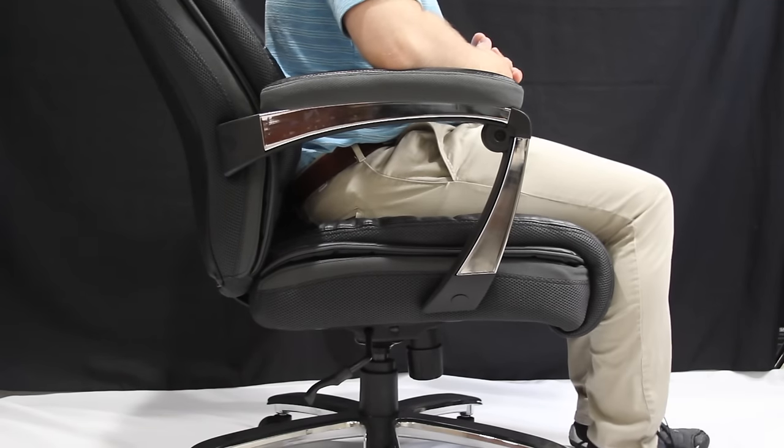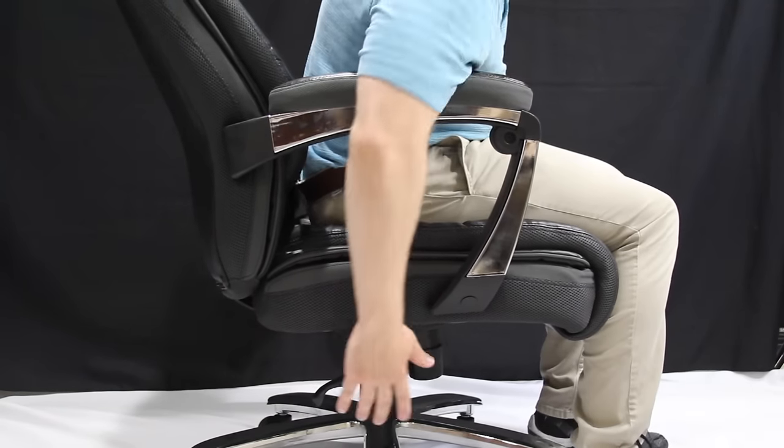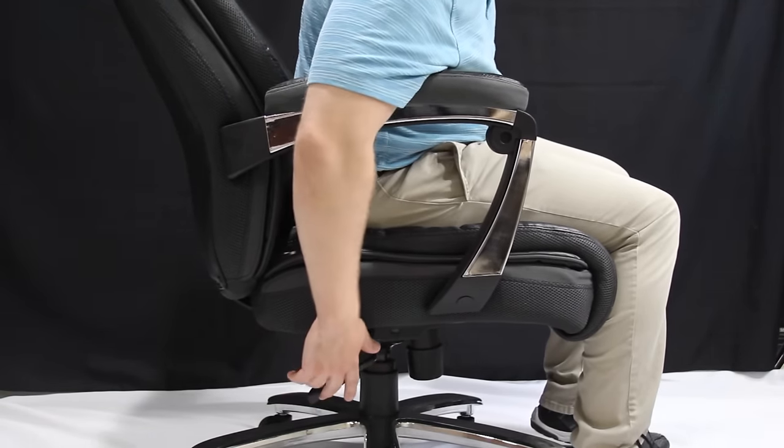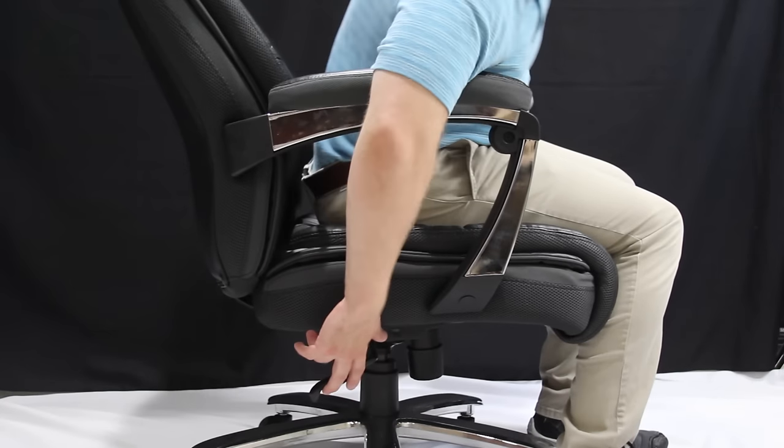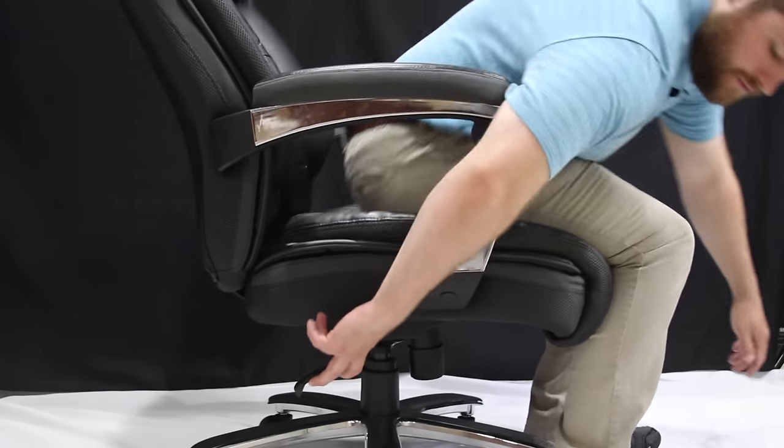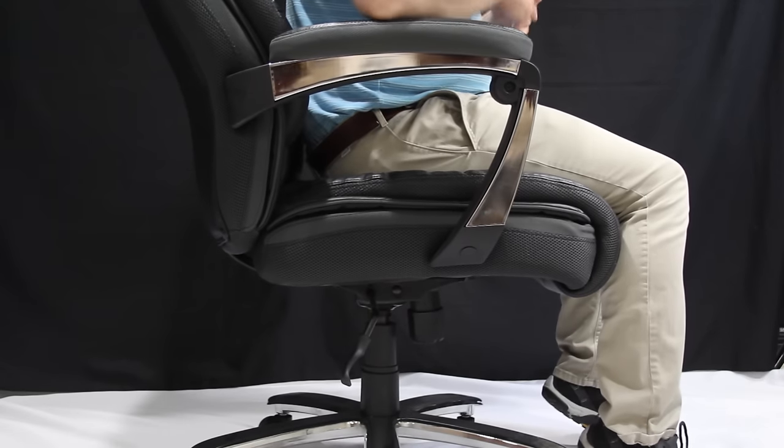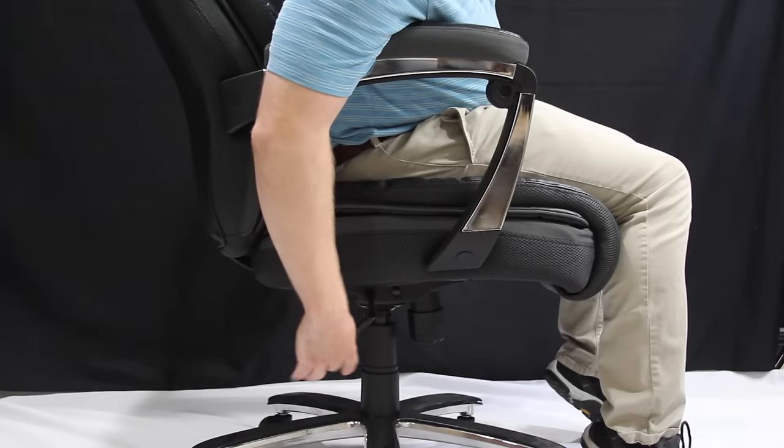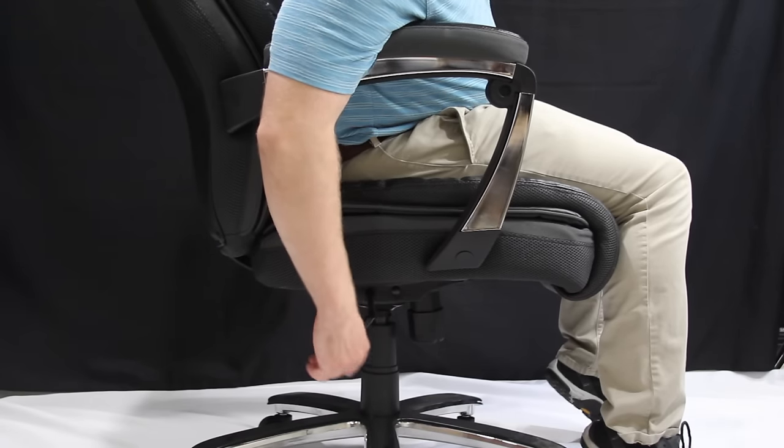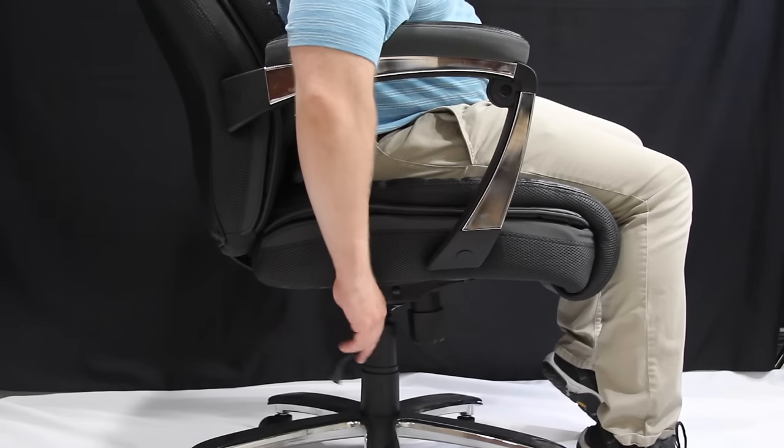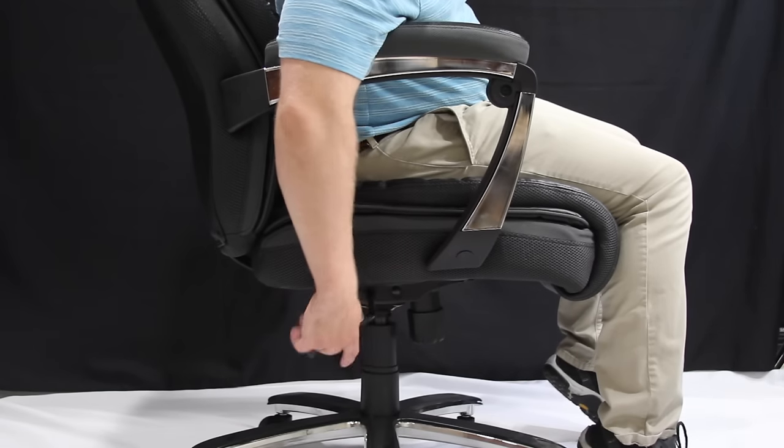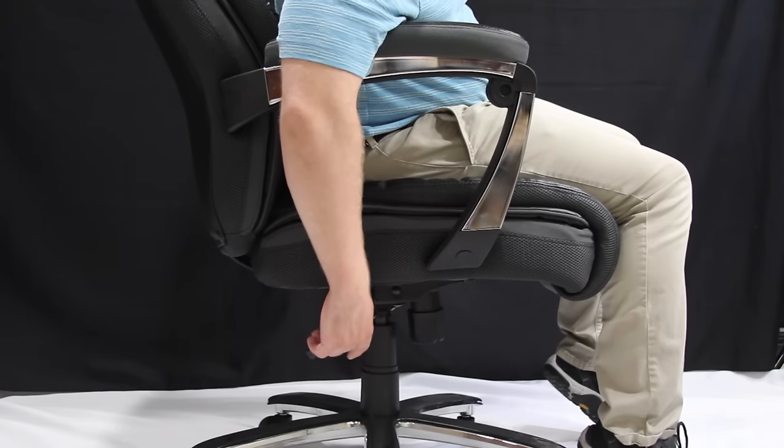To adjust the height of your chair, remove your weight from the seat and pull up on the seat height adjustment lever to initiate the cylinder. This movement is somewhat of a pull up, but it's also a twisting upwards. So if it's not going for you, make sure you're kind of twisting that lever into its position.